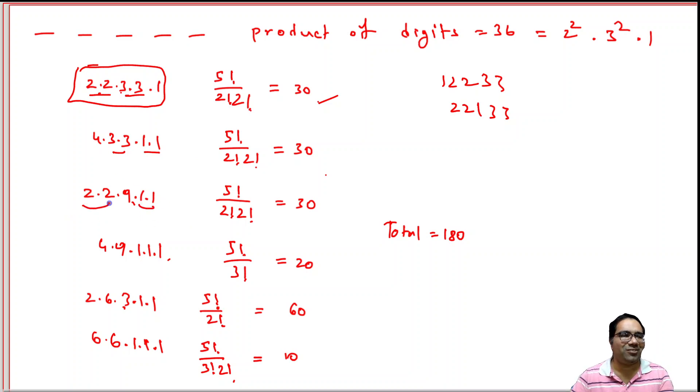Here, 5! / 3! because 3 ones. Here, 5! / 2! because there are 2 ones. Here, 5! / (2! × 3!). These are the various types of arrangements that are possible.